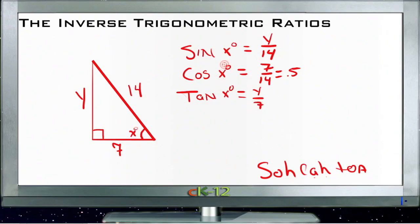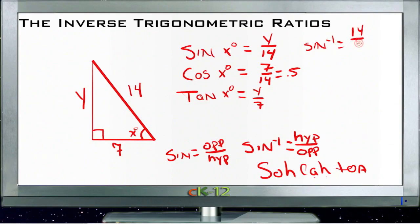Now the inverse trigonometric ratios are just these ratios upside down. If sine is opposite over hypotenuse, then the inverse sine, sine to the negative 1 is how we write that, would just be hypotenuse over opposite. So it's just upside down. So that means that the inverse sine for this same triangle for X degrees would be 14 over Y.